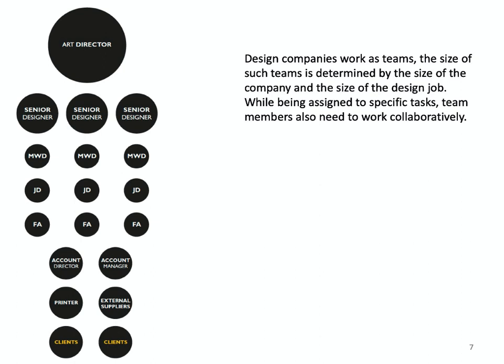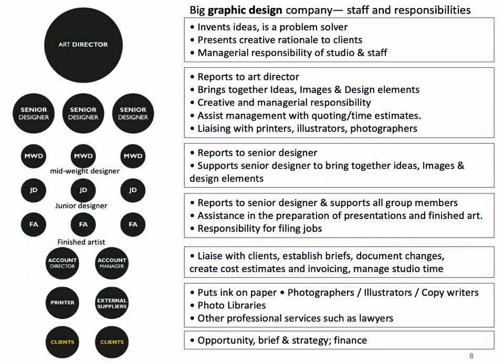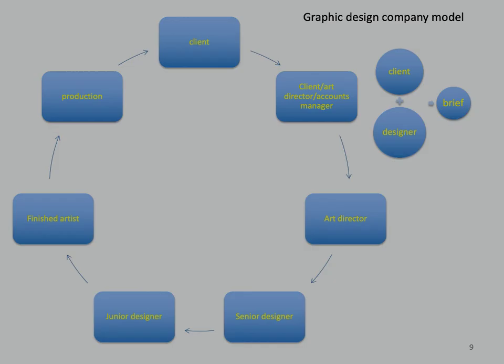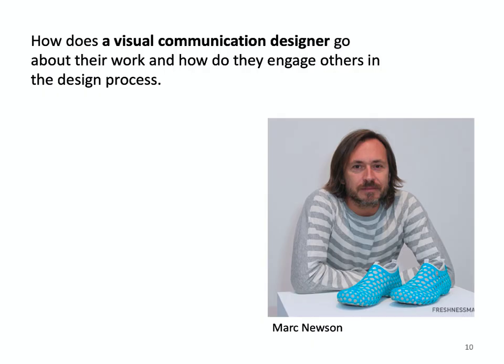Design companies work as teams. The size of such teams is determined by the size of the company and the size of the design job. While being assigned to specific tasks, team members also need to work collaboratively. If you were to look at the responsibilities of the staff of a big graphic design company, its hierarchy would look something like this. In such a company, the art director is the boss. They are also the creative head, from whom ideas flow downward to various levels of assisting designers, who in turn pass off the work to finished artists who get work ready for production.